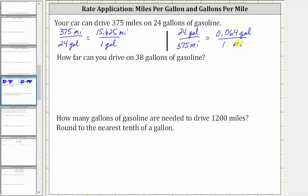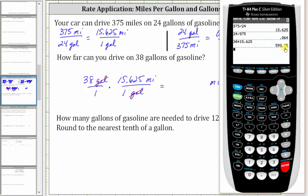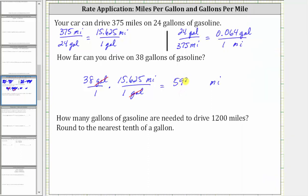Now we'll use these unit rates to answer the two questions. The first question is how far can you drive on 38 gallons of gas? We will use the rate that expresses the number of miles per one gallon. So let's write 38 gallons as a fraction with a denominator of one, and multiply by the unit rate of 15.625 miles per one gallon. Notice how we have gallons divided by gallons, and the units of gallons simplify out, leaving us with miles. We multiply 38 times 15.625, which is equal to 593.75.